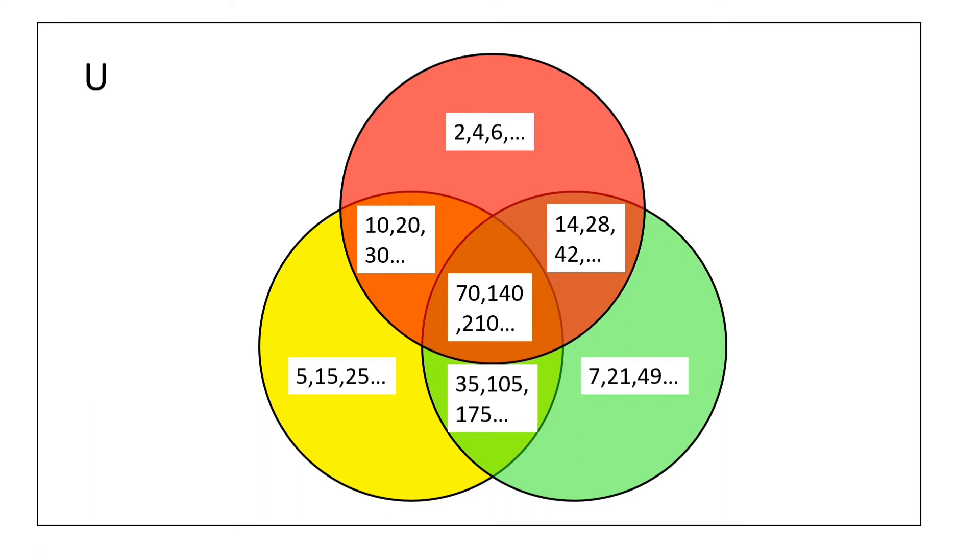After all these numbers, certain numbers are left which are relatively prime to 7000, and we have to calculate the number of these elements.